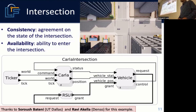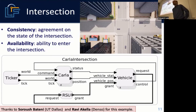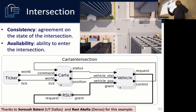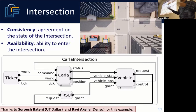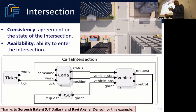We could get collisions if cars disagree on the state of the intersection. In this situation it's really better to emphasize consistency over availability. Whether you emphasize consistency or availability is very application-dependent, and you have to design your system to explicitly make these trade-offs.